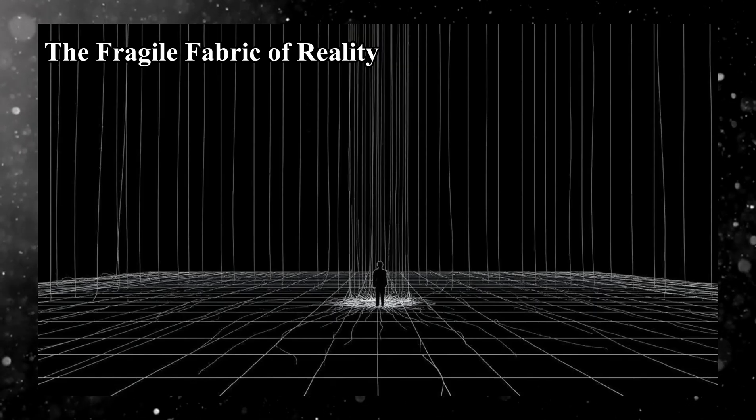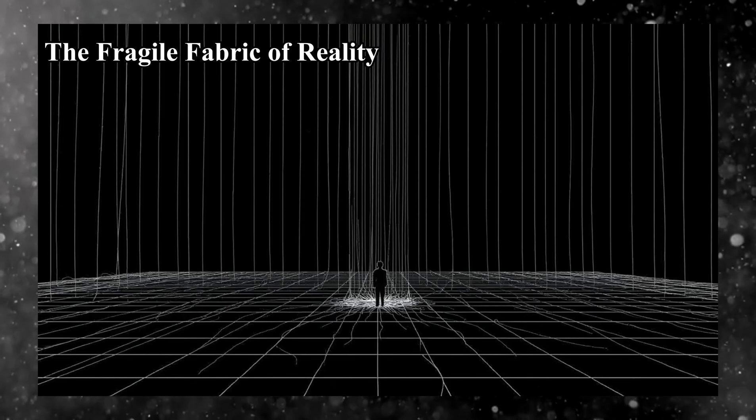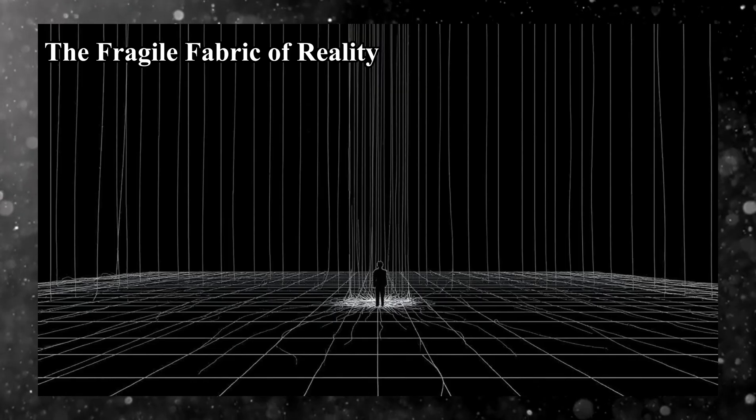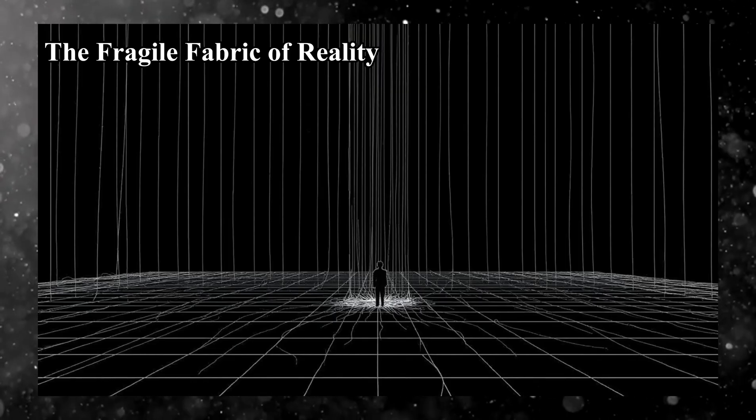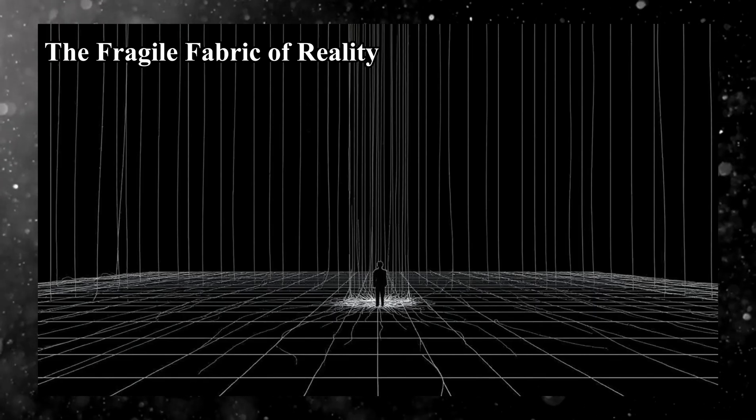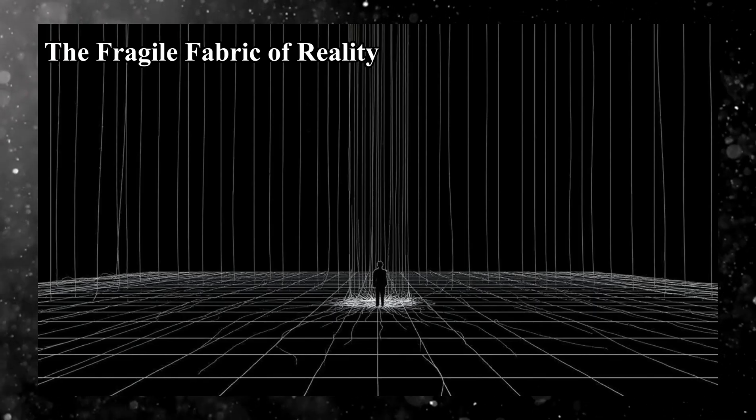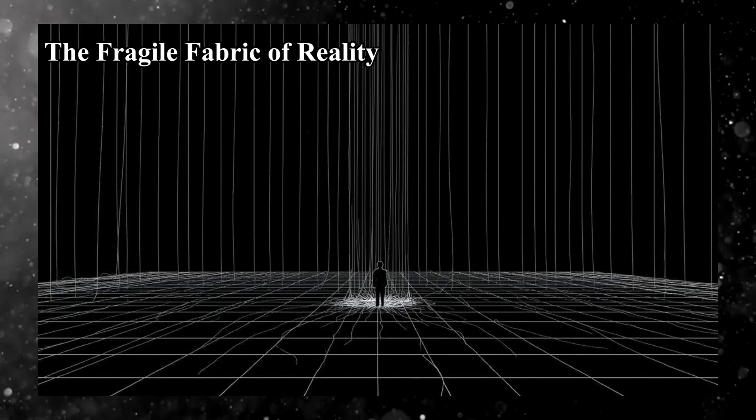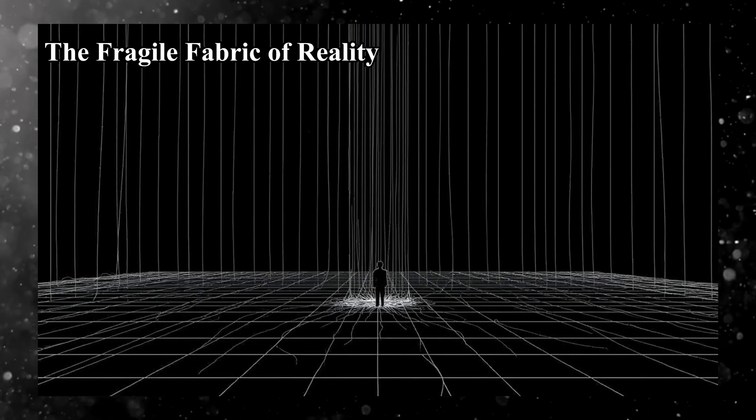Some theories suggest this is more than metaphor. Take the idea of vacuum decay. Our universe exists in what's called a false vacuum, a temporary, unstable state. At any moment, it could collapse into a lower energy configuration. If that happened, the laws of physics would rewrite themselves instantly.